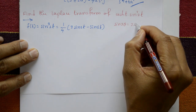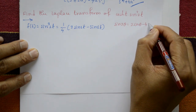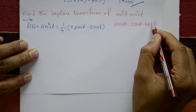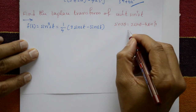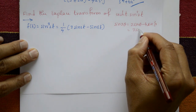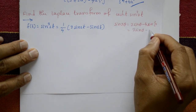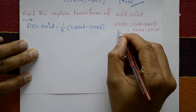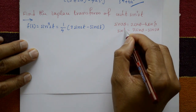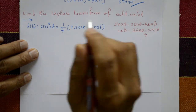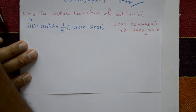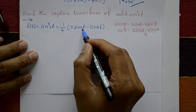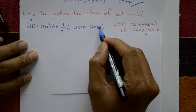The formula is sin(3θ) = 3sinθ − 4sin³θ. Rearranging, sin³θ = (3sinθ − sin3θ)/4. Applying this with θ = 2t, we get sin³(2t) = 1/4 · (3sin(2t) − sin(6t)).